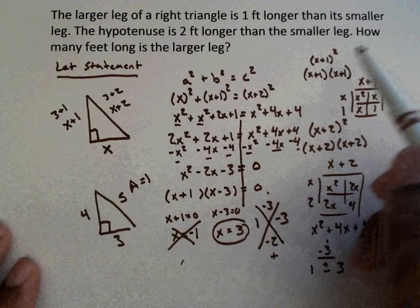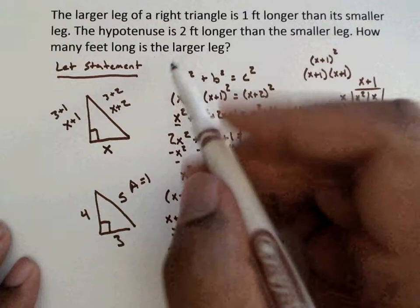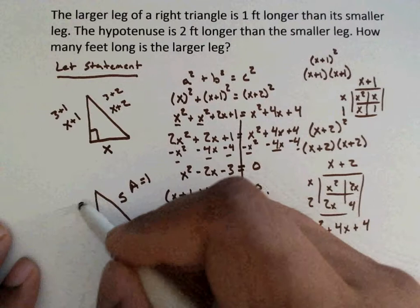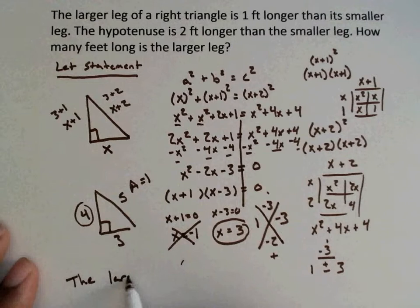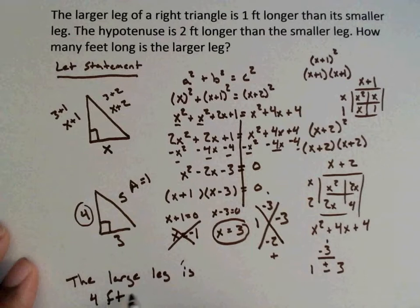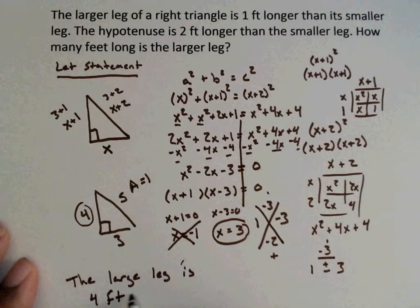But when we go back to the question, it says, how many feet long is the larger leg? So the larger leg is this one, because that's the hypotenuse and this is the small. So our large leg is 4 feet. The large leg is 4 feet long. And that's your answer. I really hope that this video helped. If you have any further questions, please feel free to watch the video over again.